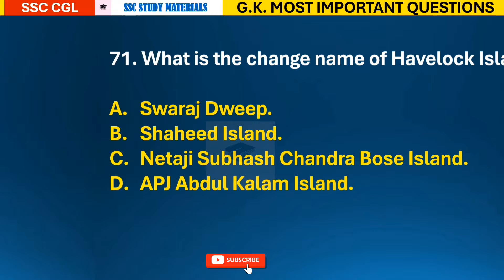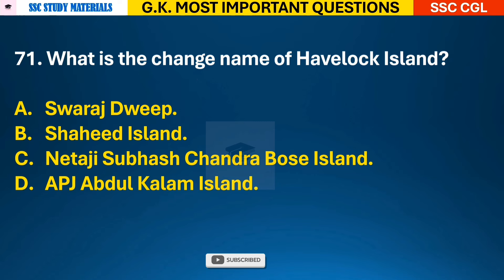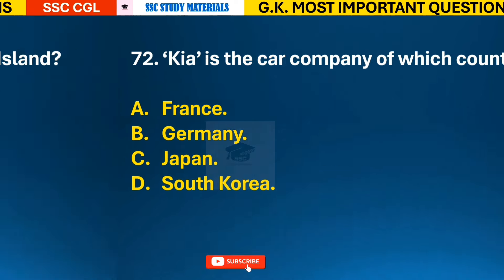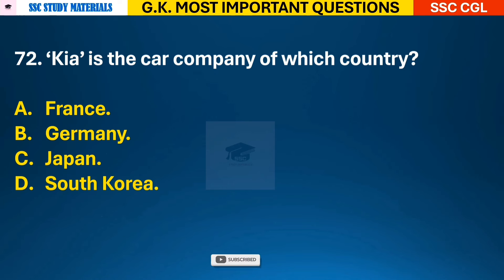Question 71: What is the changed name of Havelock Island? Answer A - it is Swaraj Dweep. Question 72: Kia is the car company of which country? Answer D - South Korea.